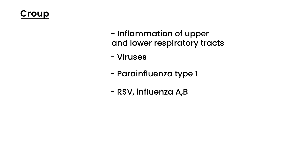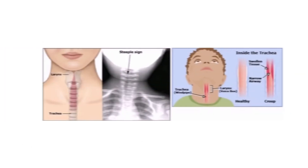Croup is basically an inflammation of the larynx, trachea, and the bronchioles, including all the way down to the lung. Let me show you a little diagram that illustrates that.